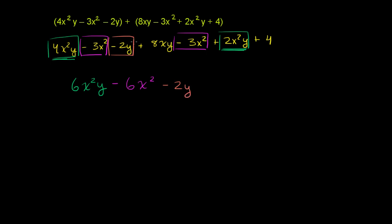And then this looks like the only xy term right here. So I'll just rewrite it, plus 8xy. And then finally, I have the plus 4. And it looks like this is done. 6x squared y minus 6x squared minus 2y plus 8xy plus 4.